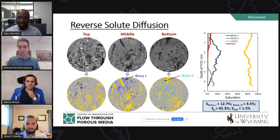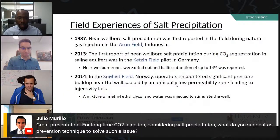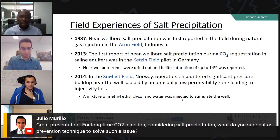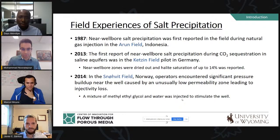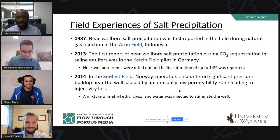A final question from Julio: for long-term CO2 injection considering salt precipitation, what prevention techniques do you suggest? In the field — for example, in the Snøhvit field — they actually injected a mixture of methyl ethyl glycol and water. You might think deionized or distilled water would work, but that's quite expensive, so they used methyl ethyl glycol, which is an even better solvent than water for these salts.